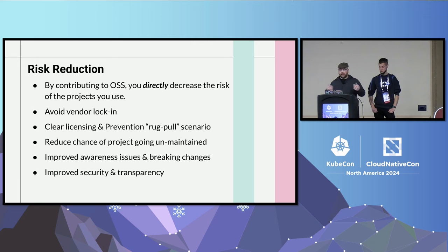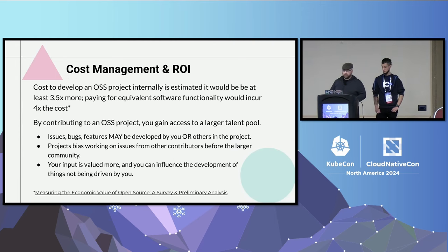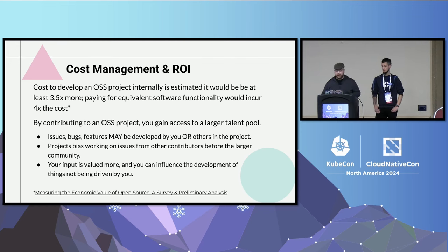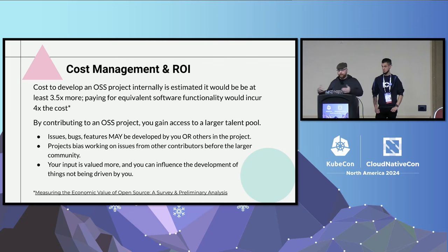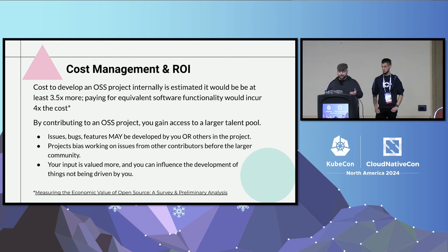In a separate study from UC Berkeley measuring the economic value of open source software, they found it would cost about four times the amount to develop an internal equivalent or go with a vendored solution. Those are general facts, but they don't give us concrete things to look at. When you start to look deeper at the issues you create and who fixes them, you'll frequently find they're actually fixed by others outside your own organization.